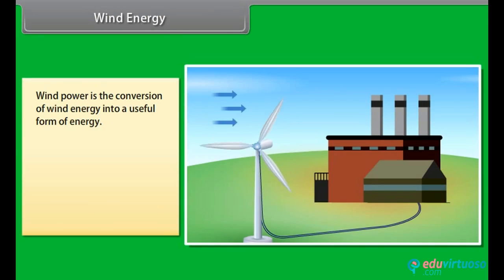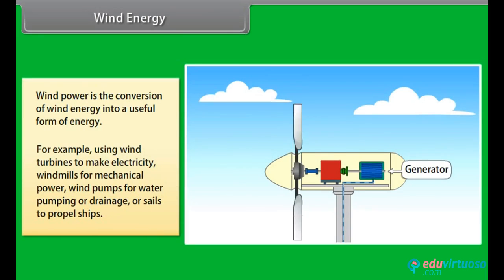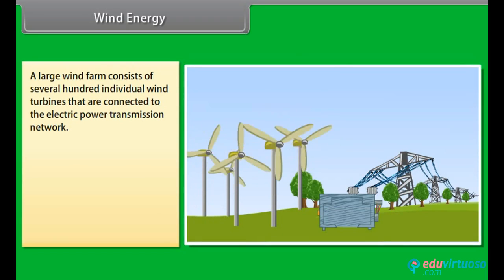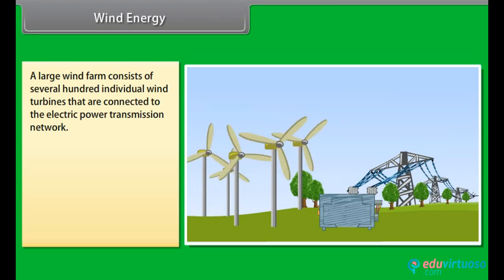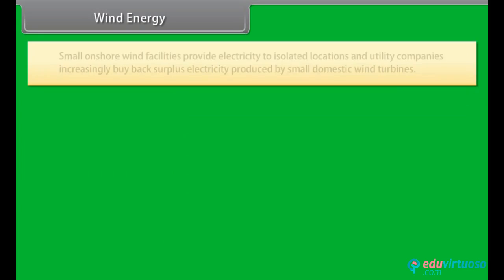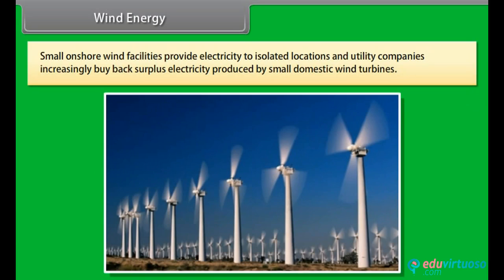Wind energy. Wind power is the conversion of wind energy into a useful form of energy using wind turbines to make electricity, windmills for mechanical power, wind pumps for water pumping or drainage, or sails to propel ships. A large wind farm consists of several hundred individual wind turbines connected to the electric power transmission network. Offshore wind farms harness more frequent and powerful winds than land-based installations but have considerably higher construction costs. Small onshore wind facilities provide electricity to isolated locations, and utility companies increasingly buy back surplus electricity produced by small domestic wind turbines.